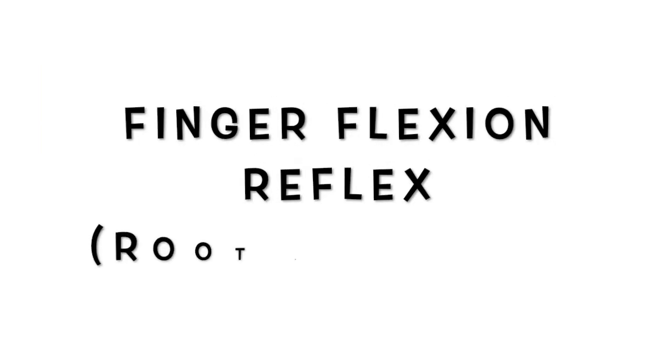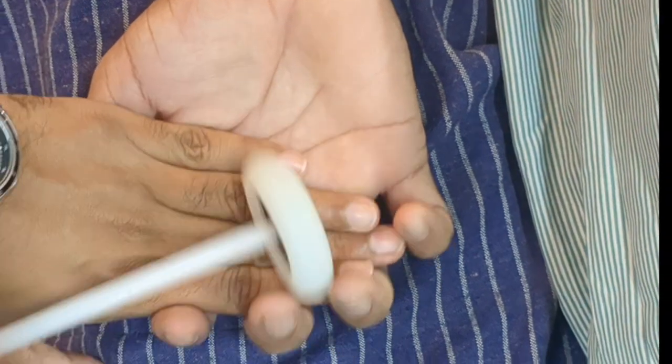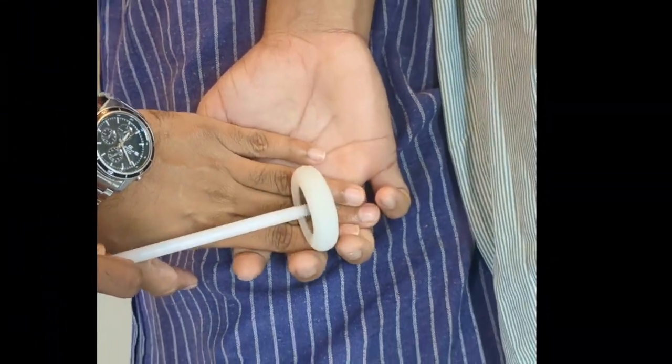First is finger flexion reflex. The root value is C8, mainly C8. De Jong's clinical methods mentions that Wattenberg sign is nothing but finger flexion reflex, but he also admits that Wattenberg sign has got many equivalents and finger flexion reflex is one of them. So let us try to avoid this terminology for finger flexion reflex.